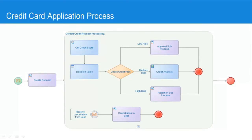What we're looking at here is a screenshot of the process design from the Cordis Business Operations Platform. As we can see on the left, the input to the process is a customer filling in a form online requesting a new credit card. The first thing that happens in the process is the request is created in the back-end banking systems and then we move into processing of that credit request.